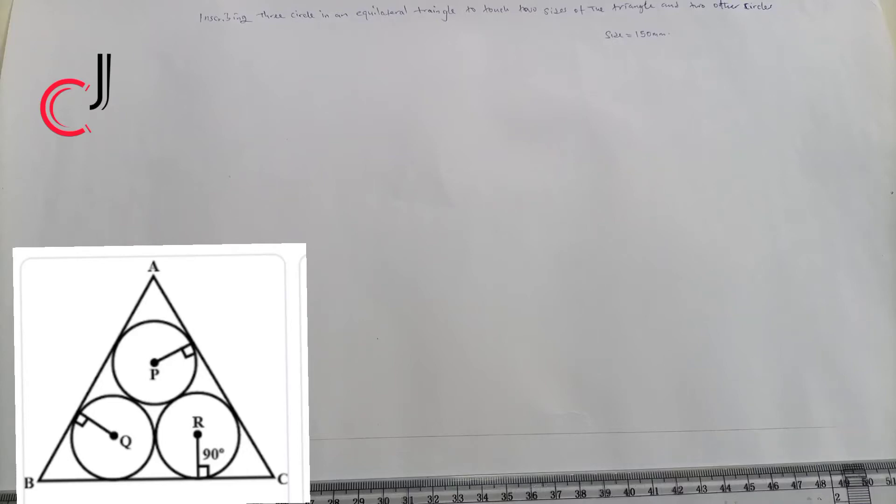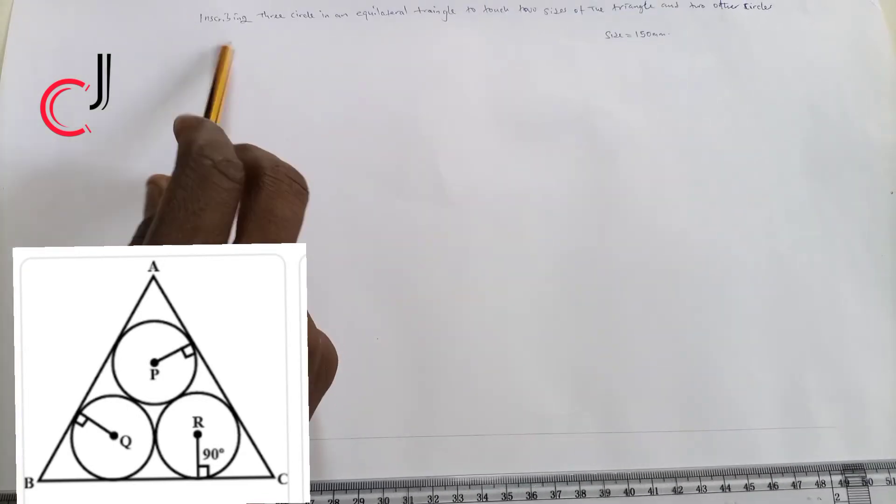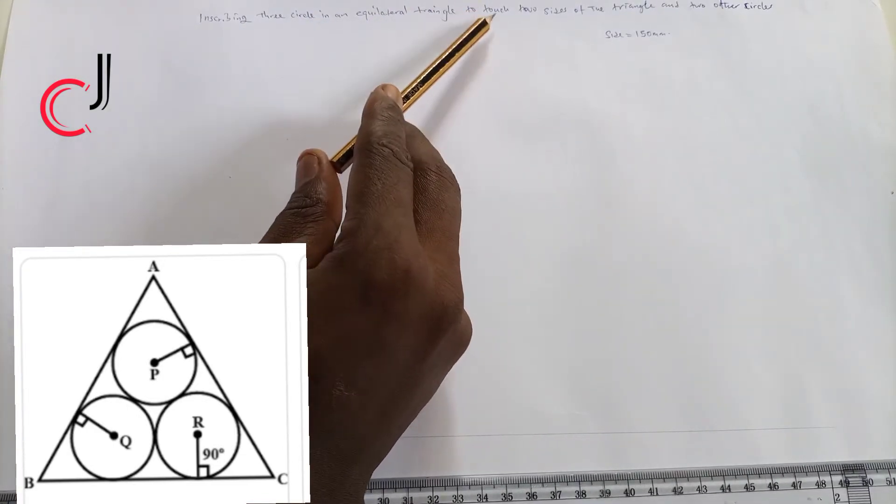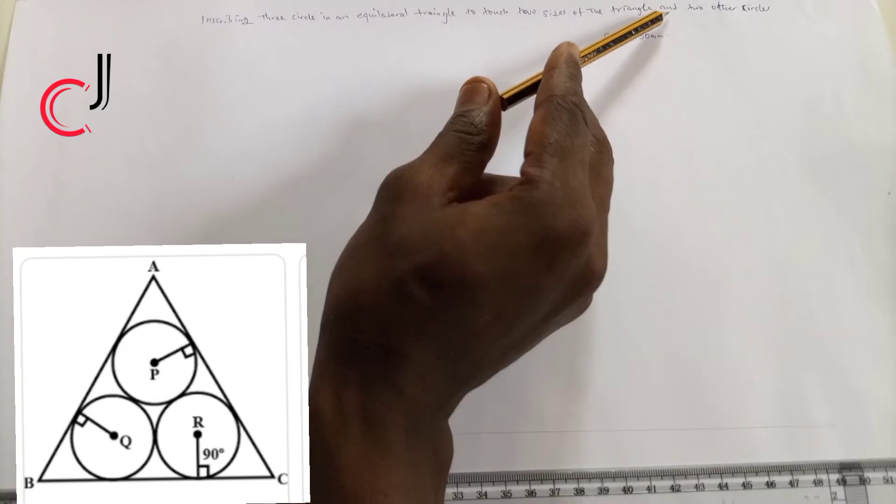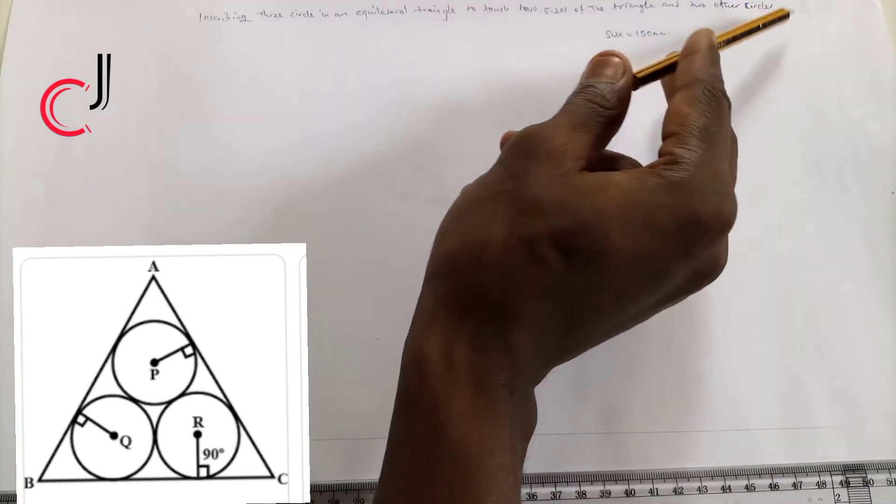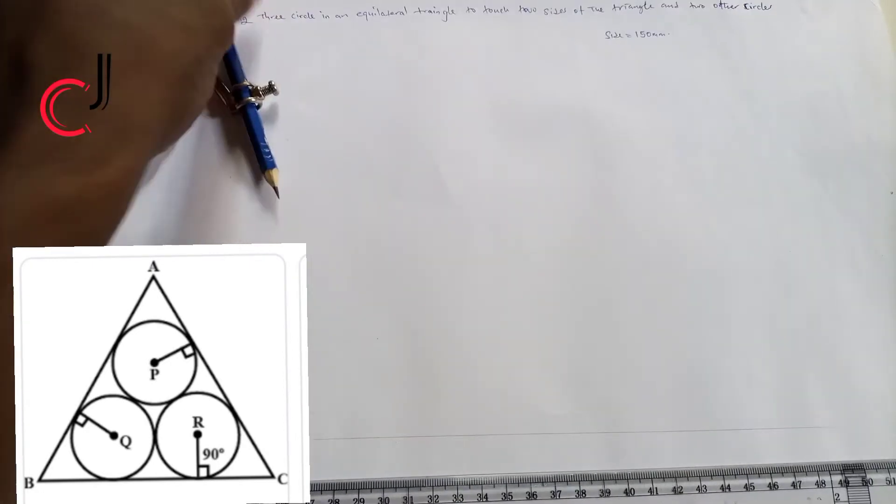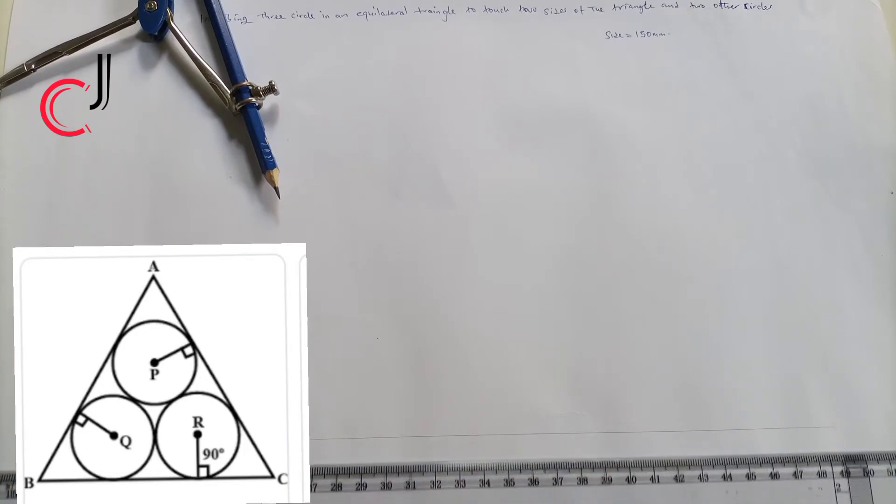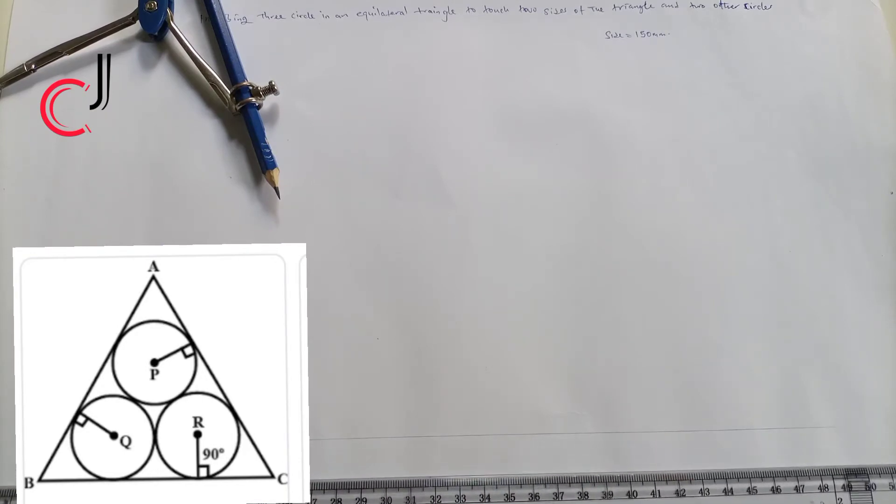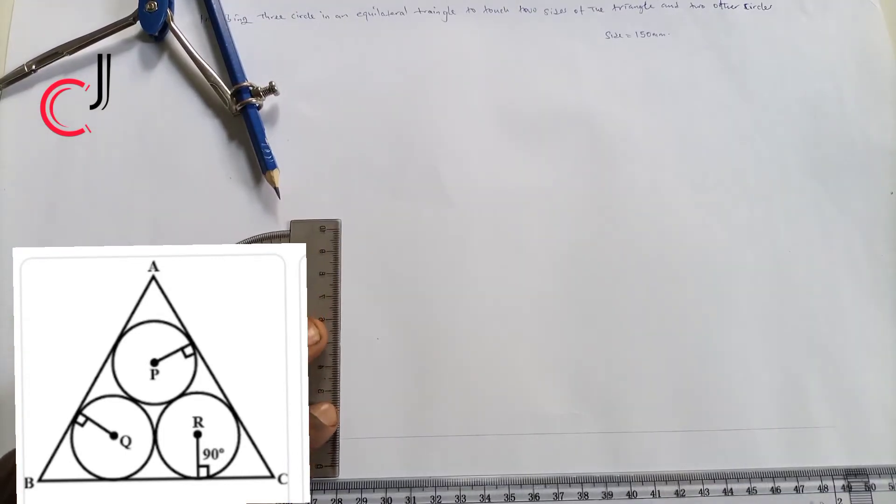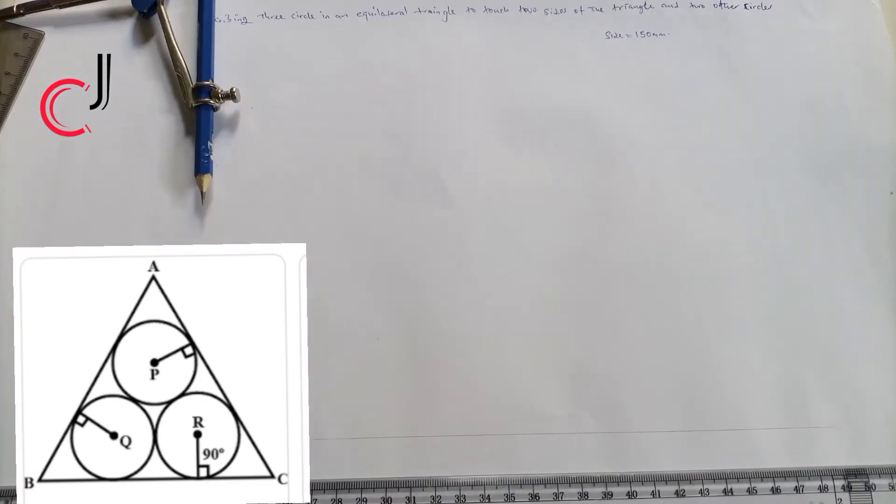Hello guys, today we'll be discussing how to inscribe three circles in an equilateral triangle to touch two sides of the triangle and two other circles, given that the size is 150 millimeter. First thing we do is draw a horizontal line using a T-square. Then we pick a point of our choice.